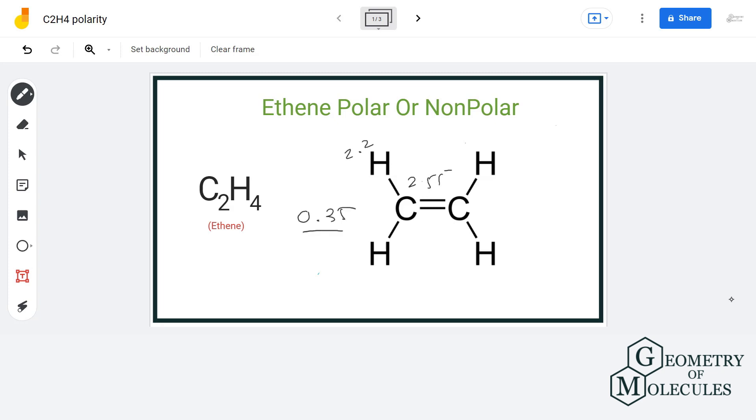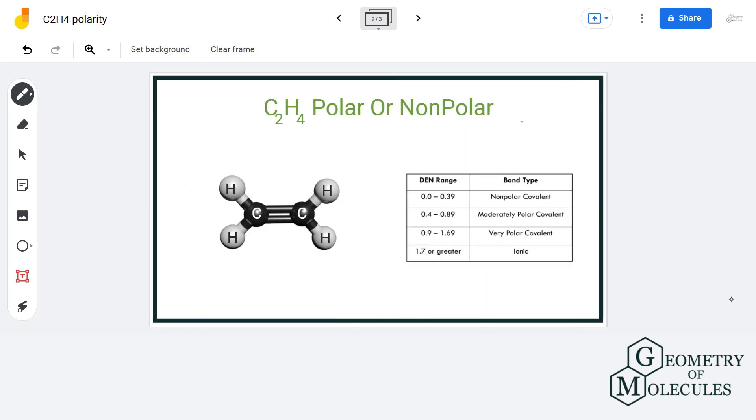Since the electronegativity difference between the carbon-carbon and carbon-hydrogen bonds is very small, there is almost no dipole moment present in the bonds. We can also refer to this electronegativity difference table for determining the bond type.